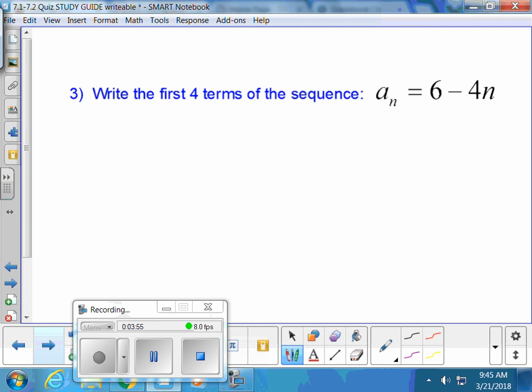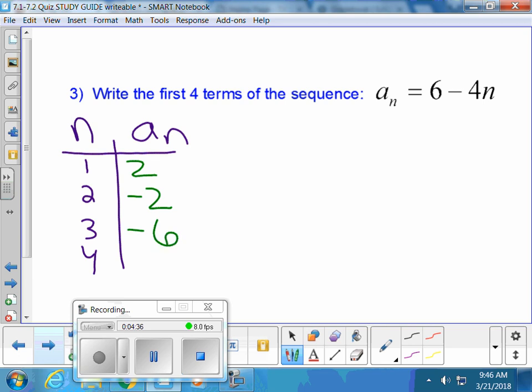We're going to write the first 4 terms of the sequence. We can call these x's and y's or n's and a_n's. It's really the same thing. We're going to plug and chop. 6 minus 4 times 1 would be 2. 6 minus 4 times 2 would be 6 minus 8, negative 2. 6 minus 4 times 3 would be 6 minus 12, negative 6. And 6 minus 4 times 4 would be 6 minus 16, so negative 10. These are your first four terms: 2, negative 2, negative 6, negative 10.